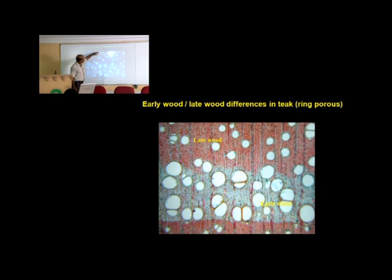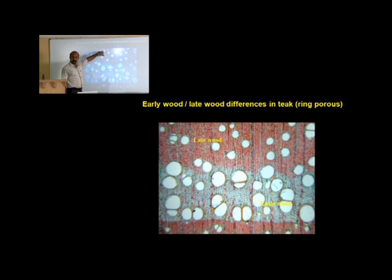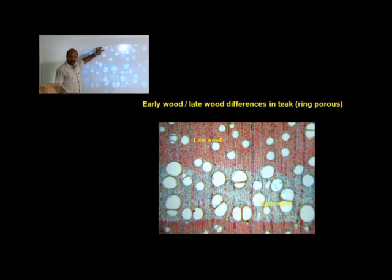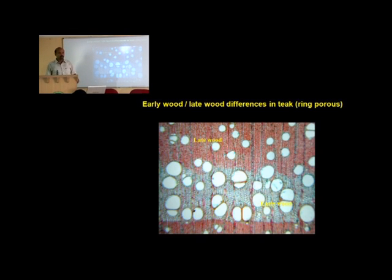This is one year's growth and you can see large vessels — these are vessels, otherwise called as pores. Compared to late wood, it is having small size vessels and more fiber; the remaining tissues are all fibers. Such distinction or difference between early wood vessels and late wood vessels make the ring for us, and thereby the rings are very clear and they are very beautiful to look at.